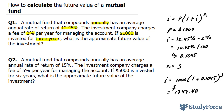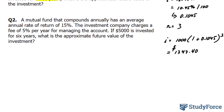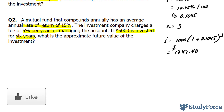Let's move on to question two, which is very similar to question one. A mutual fund that compounds annually has an average annual rate of return of 15%. The investment company charges 5% per year. If $5,000 is invested for six years, what is the approximate future value?